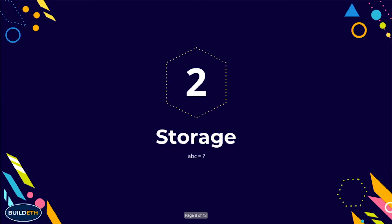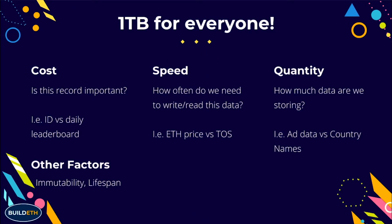Next, let's talk about storage — the same three core concepts. Cost: how important is this data? Consider ID versus a data leaderboard. I once worked on a dApp where the product manager really cared about having every single action on-chain, which made it completely unusable — you'd just sit there clicking MetaMask confirmations constantly. Whereas something like an ID should always have a source of truth people can check. Speed: how often are we reading or writing this data? Reading doesn't matter as much since you're hitting a full node. Writing is much more expensive, and you don't want to overflow the Ethereum network.